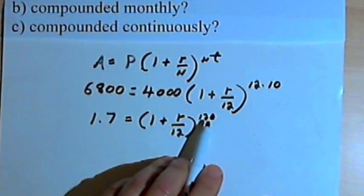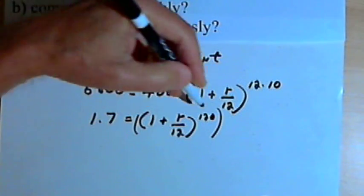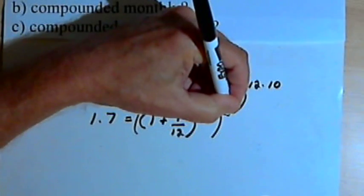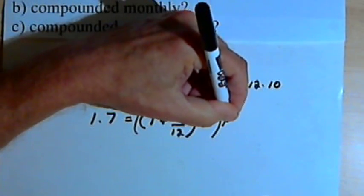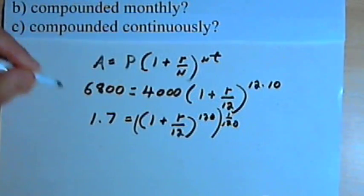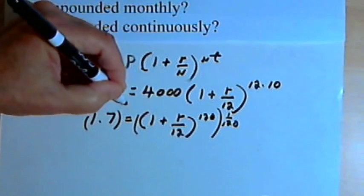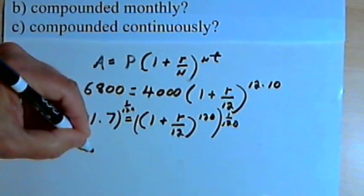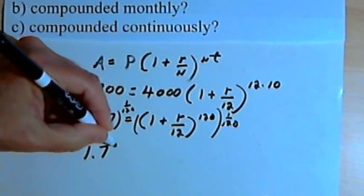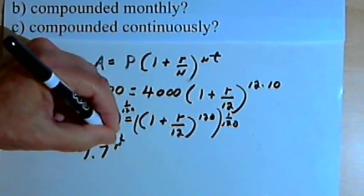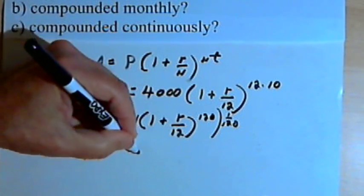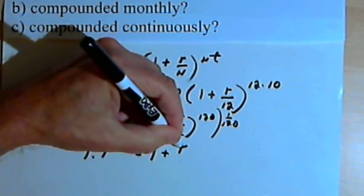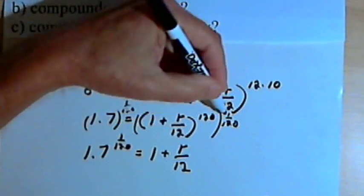I want to get rid of the exponent, so I'll raise both sides of the equation to the 1 over 120, raised to the 1 over 120 equals 1 plus r over 12.